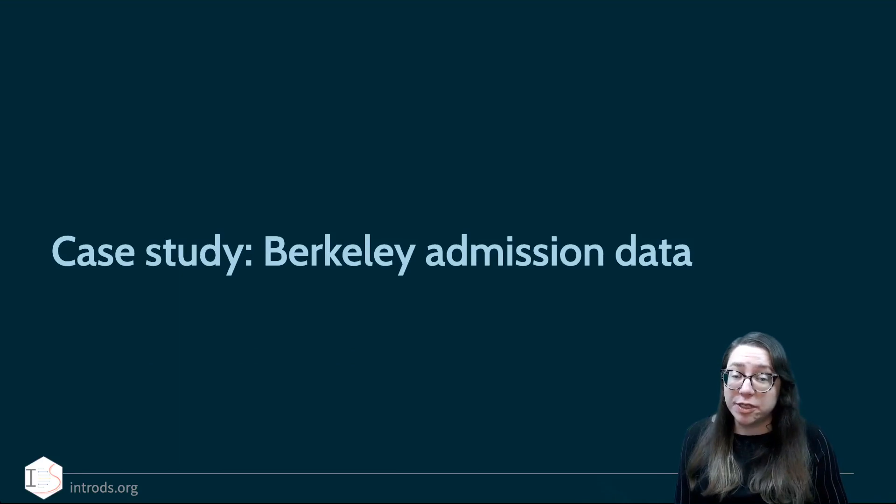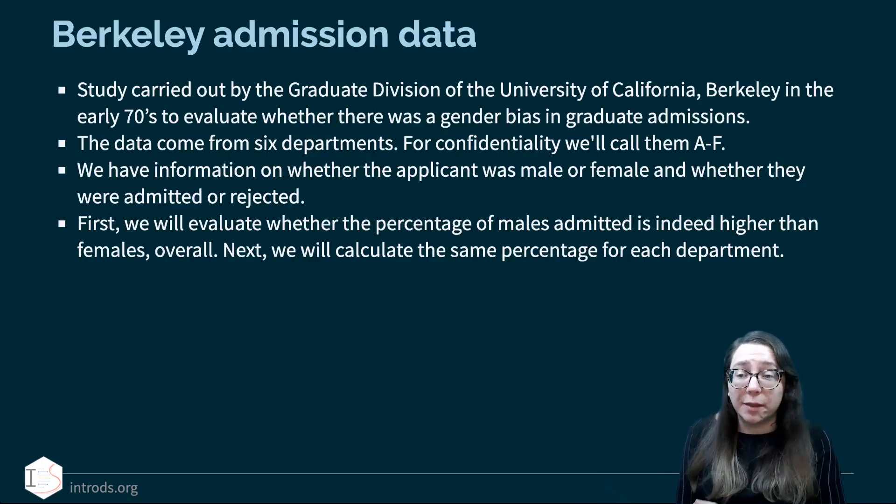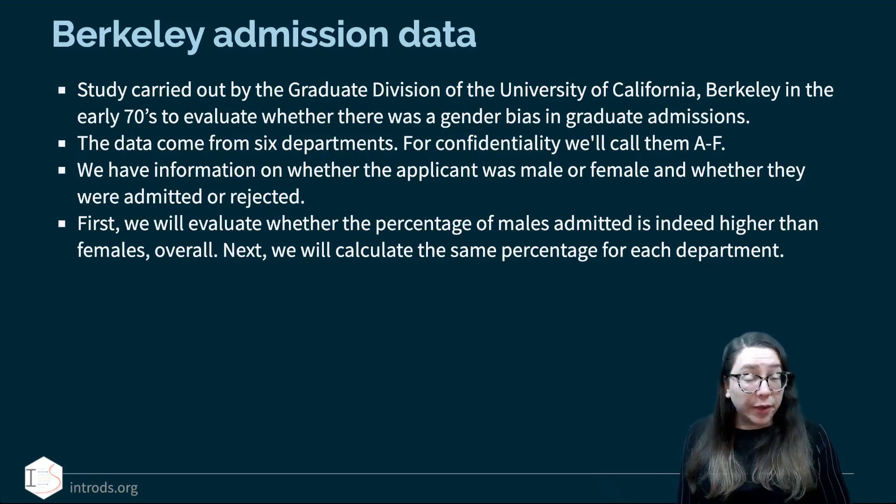This is admission data from University of California Berkeley, historical data dating back to the early 70s. This is based on a study carried out by the Graduate Division of University of California Berkeley to evaluate whether there was a gender bias in graduate admissions. In this particular dataset, gender is defined as binary. The data come from six departments labeled A through F for confidentiality. We have information on whether the applicant was male or female and whether they were admitted or rejected. First we're going to evaluate whether the percentage of males admitted is indeed higher than females overall, and then we're going to take a look at the breakdown by department.